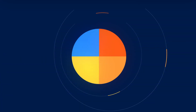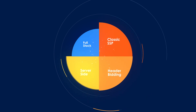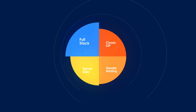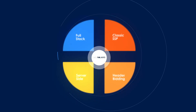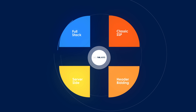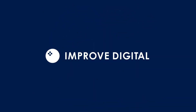Our advice? Understand the task at hand to choose the right solution for the job. One platform. Four trading model options. 360 Polaris by Improve Digital — for transparency, for revenue, for content providers.